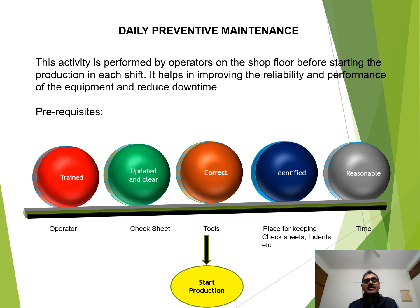The prerequisite for this activity is that the operator has to be trained on the points he needs to attend on the machine. The check sheet on which the operator is going to give his judgment has to be updated and clear. The tools the operator is going to use have to be correct. The place for keeping the check sheets, indents, etc., has to be identified so that the operator is not wasting his time. And last, the time allotted for this activity has to be reasonable.